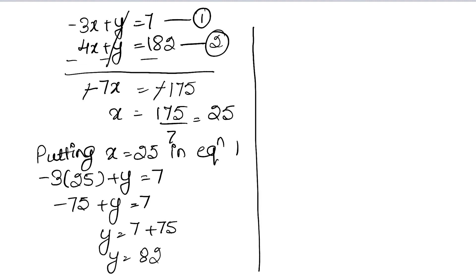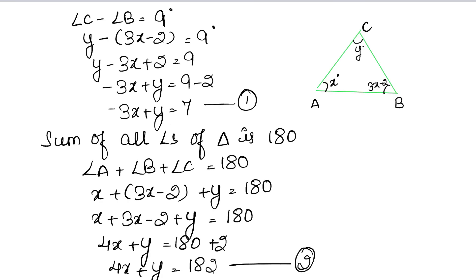Now we have three angles. So angle A was our x degrees, which is our 25, right? Angle A is our 25 degrees. Angle B was our 3x minus 2, right? Let's check this one.